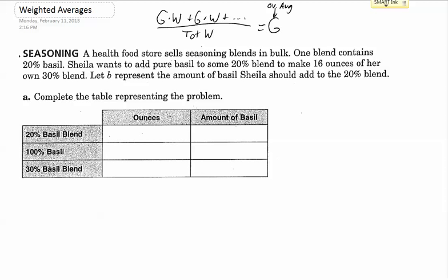It says for the amount of basil that's easy because we're just going to go ahead and put in the 20%, the 100%. You could technically do a different thing here but I'm just going to do it this way so that we can be consistent and write down the things that we have. Okay, so we've got the 20% and the 100% and the 30%. Now I need to figure out how many ounces of each of these I have.